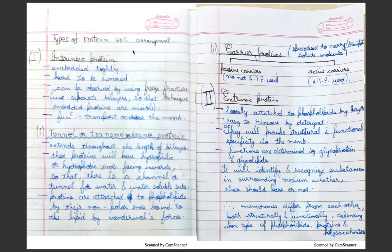Intrinsic protein is highly embedded tightly and it is hard to remove. It can be observed by freeze-fracture technique. We separate the bilayer so that embedded proteins are visible. In freeze-fracture technique, the function of intrinsic protein is to protect transport across the membrane.